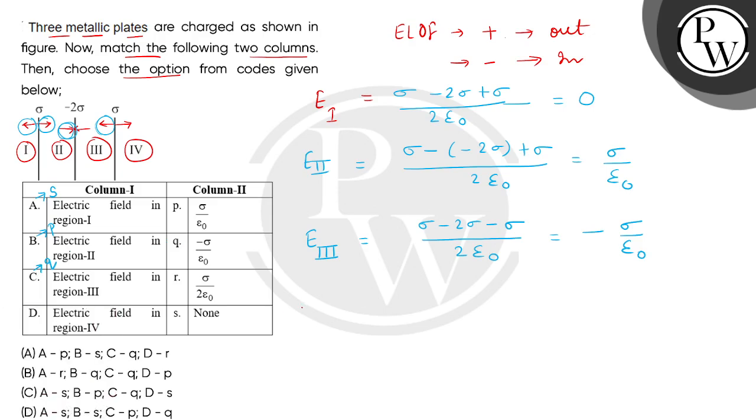Now let's see entry number D, in which we have to find electric field in this fourth region. So we will act in the same way. This is sigma minus 2 sigma plus sigma whole divided by 2 epsilon 0. So this is also equal to 0. So 0 answer is present, so D answer will also come as S.